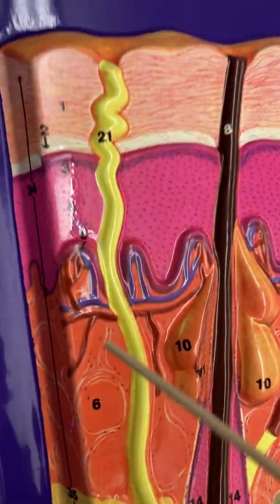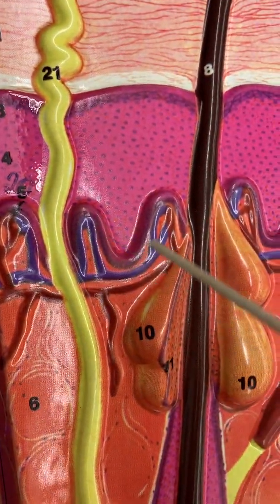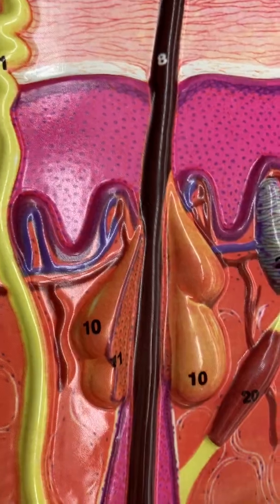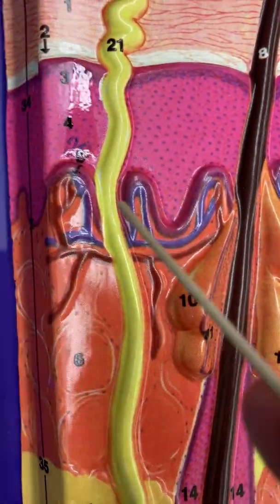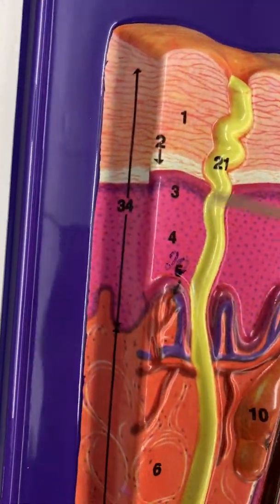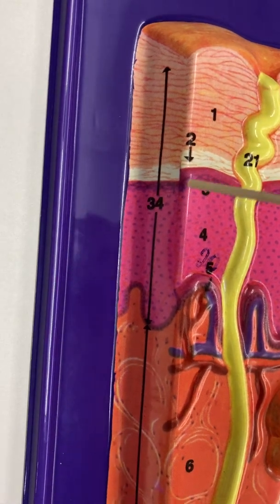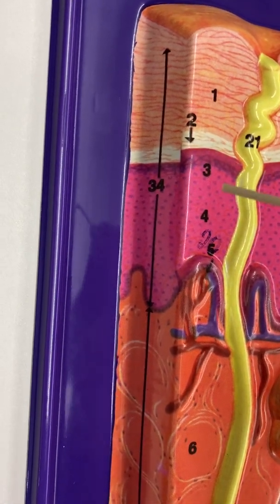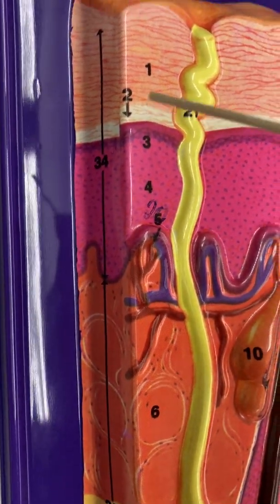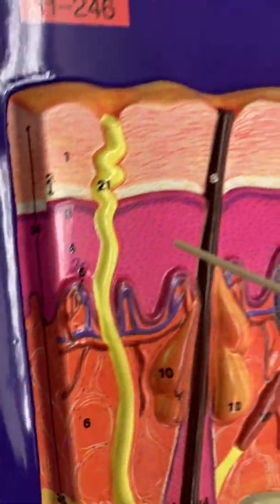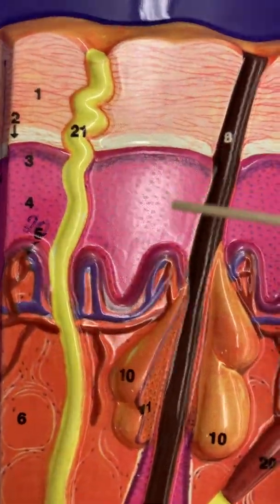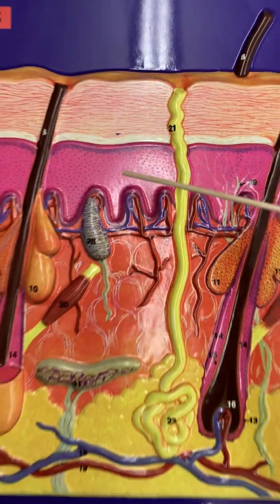The dark purple layer is convoluted, meaning not straight across. So this entire layer is peach, white, purple, pink, and then dark purple. The numbers 1 through 5 all represent the epidermis.